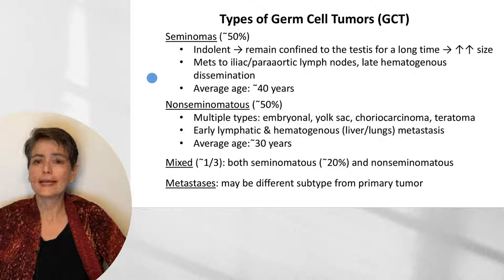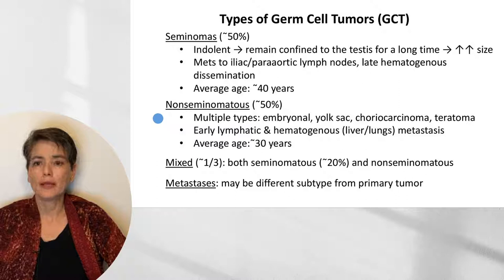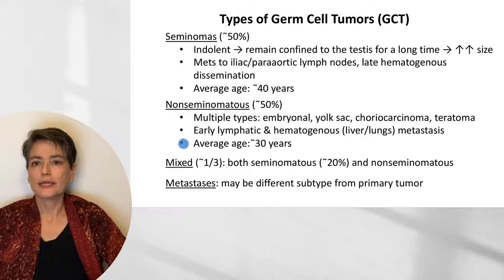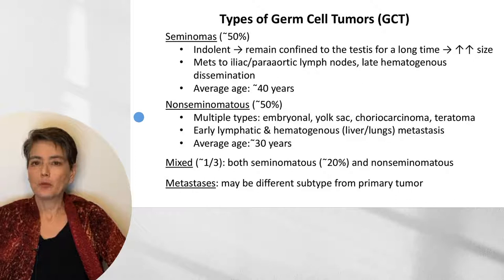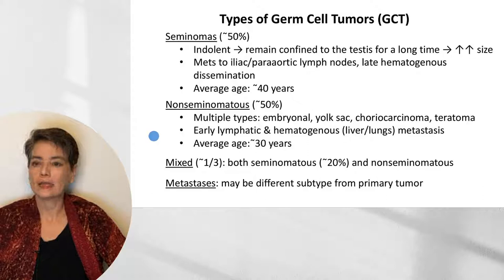Non-seminomatous tumors include multiple types such as embryonal, yolk sac, choriocarcinoma, and teratoma. Non-seminomatous also includes mixed tumors, in which we can have a variety of different types. Mixed tumors account for about a third of all germ cell tumors and can have both seminomatous, in about 20% of cases, and non-seminomatous components. The key difference is that non-seminomatous tumors tend to have early lymphatic and hematogenous metastasis, typically to the liver and lungs, and the metastatic foci may differ from the primary tumor.